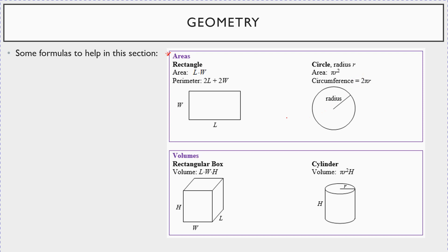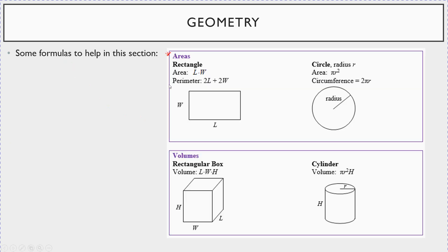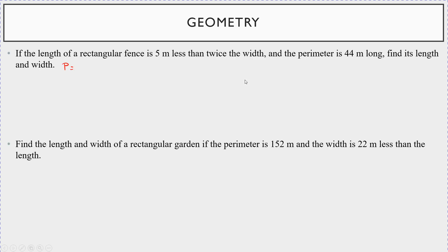Let's jump into some fun application problems, focusing on the rectangle first. Here's the first one: if the length of a rectangular fence is five meters less than twice the width, and the perimeter is 44 meters long, find the length and width. We know the perimeter: two times the length plus two times the width is equal to 44 meters.